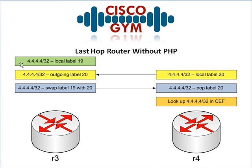R3 has already learned this prefix via IGP — EIGRP, OSPF, whatever you're running — and it's gone ahead and said: I see this prefix in my routing table, let me give it a local label. I'm going to give it local label 19. It will advertise that out to its upstream neighbor R2. R3 knows R4 has told it that its local label is 20, so when R3 builds its LFIB, it says: if I receive a packet labeled 19, I need to swap label 19 with label 20 and send it out to R4 via serial 0/0.